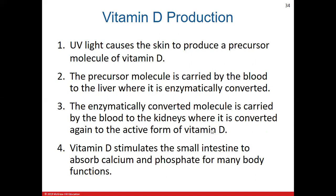At the kidneys, the molecule is converted into the active form we call vitamin D. The reason we need vitamin D is that it helps the body absorb and reabsorb calcium and phosphate — very important minerals that perform many functions. Without vitamin D, the body would excrete calcium and phosphate rapidly through the small intestines, so vitamin D helps you reabsorb these essential minerals.